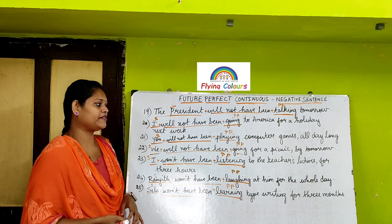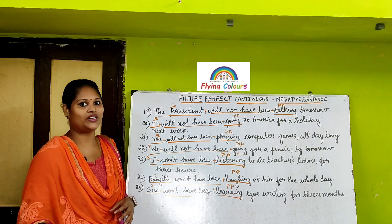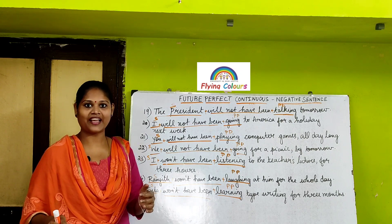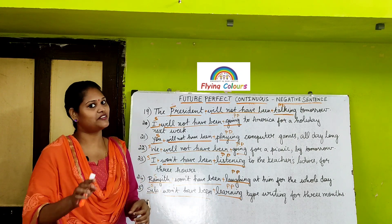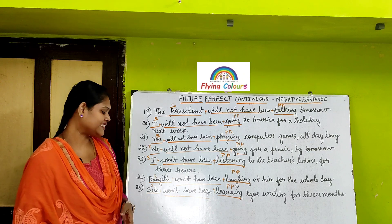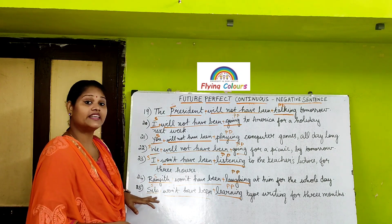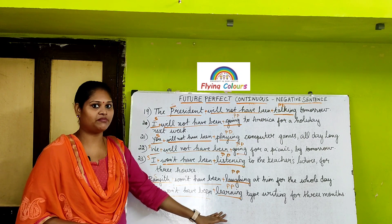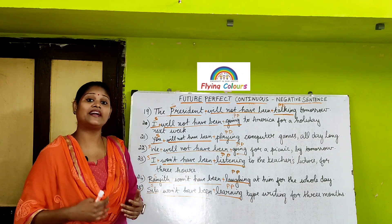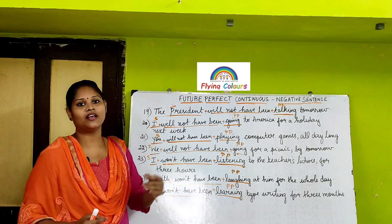Ranjit won't have been laughing at him for the whole day. Ranjit is the subject, won't have been plus laughing is the present participle, and the duration is for the whole day — he started laughing in the past, this laughing action continues in the present but will not continue in the future. Sita won't have been learning typewriting for three months — three months is the duration. Sita is the subject, won't have been plus learning is the present participle. Sita started learning typewriting in the past, continuing in the present, but in future she won't have been continuing the typewriting for the period of three months.